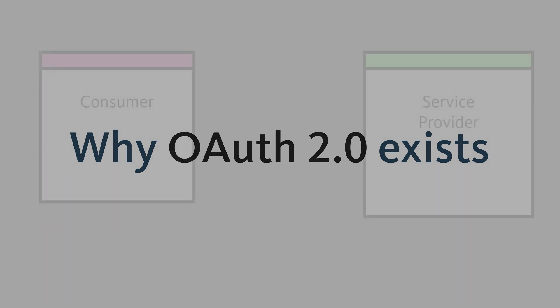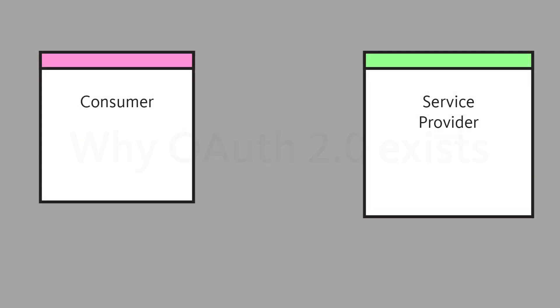OAuth 2.0 allows a user to grant a consumer site access to certain private resources that are stored on a service provider site.